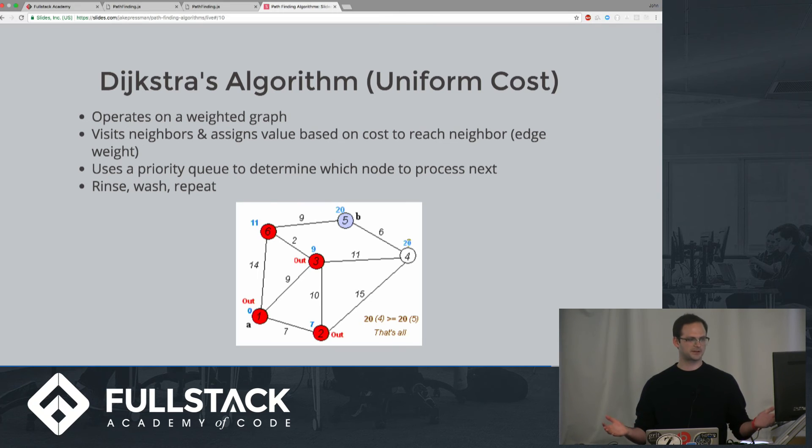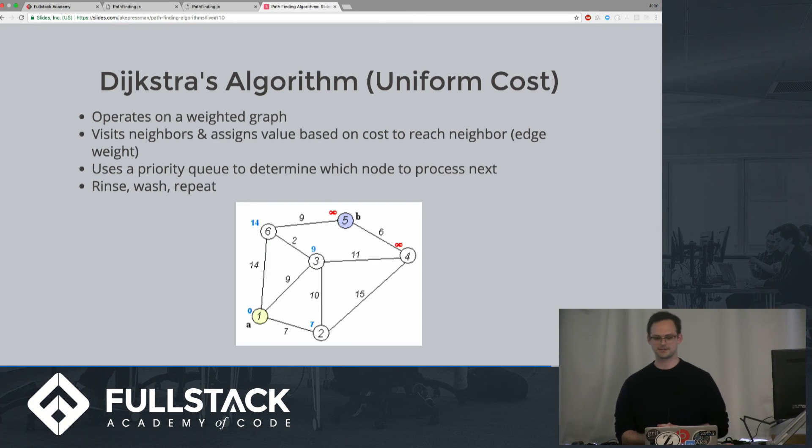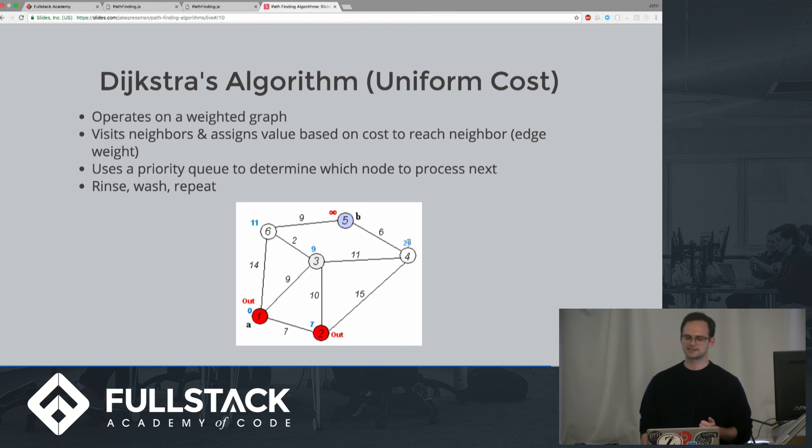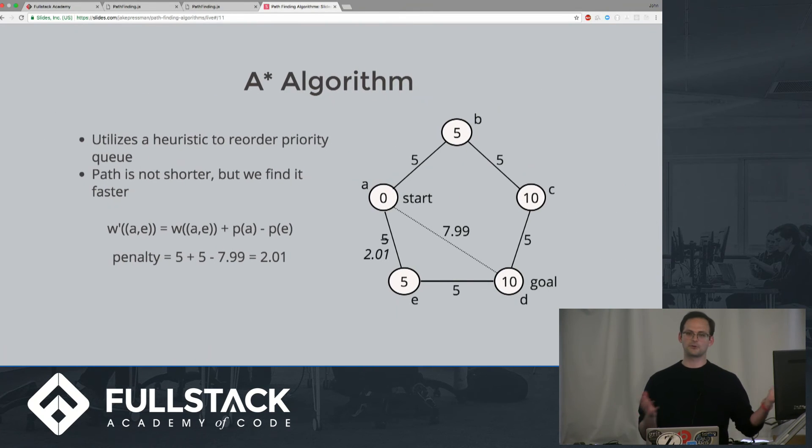So this seems pretty good, right? We're getting to the goal on a path that we know has the least amount of cost associated with it. But one thing about Dijkstra is that it'll always go to the shortest cost node, which means that it might go in the wrong direction. In other words, we're wasting time processing nodes that might not be in a promising direction.